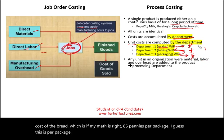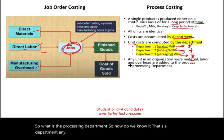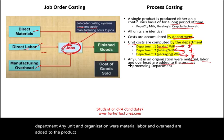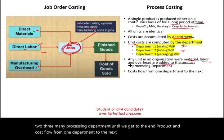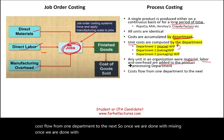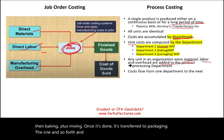A processing department is any unit in an organization where material, labor, and overhead are added to the product. We can have two, three, or many processing departments until we reach the end product. Costs flow from one department to the next: once mixing is done, the total cost transfers to baking; then baking plus mixing costs transfer to packaging, and so on, until the product is complete.